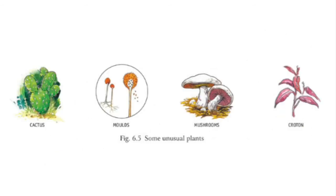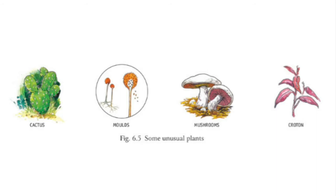These are a few unusual plants. You can see cactus, mushrooms, and croton. Croton is a type of plant but it has non-green leaves — they are red in color. Mushrooms are actually not plants; they come under a separate group called fungi.